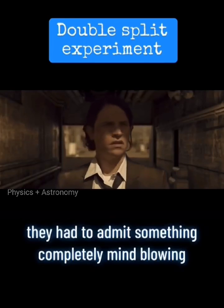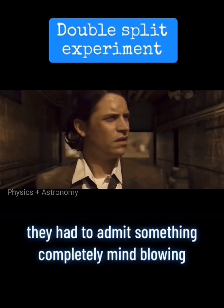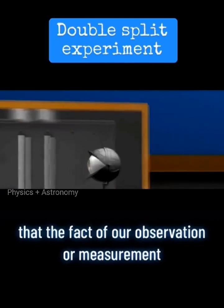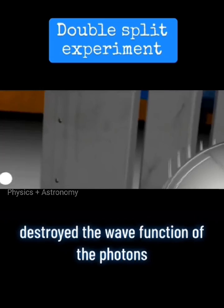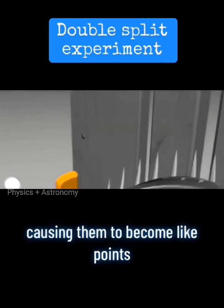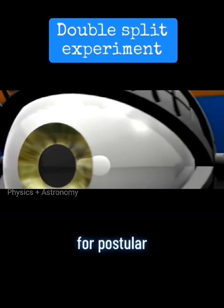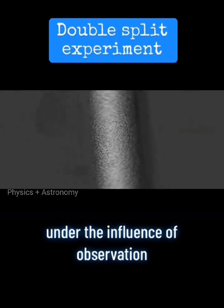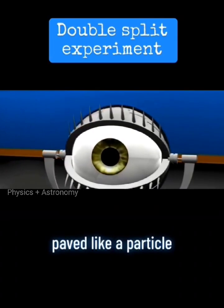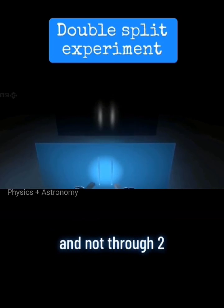They had to admit something completely mind-blowing. That the fact of our observation or measurement destroyed the wave function of the photons, causing them to become like points, corpuscular. The electron, under the influence of observation, behaved like a particle, flying through one slit and not through two.